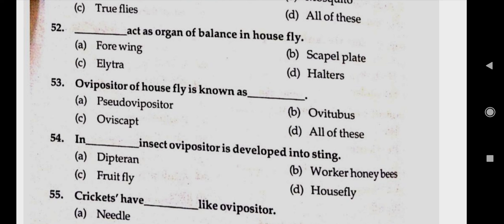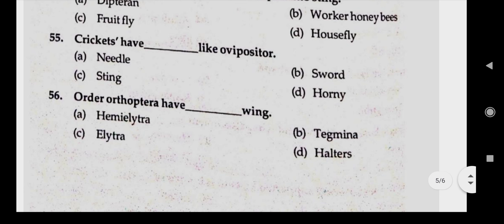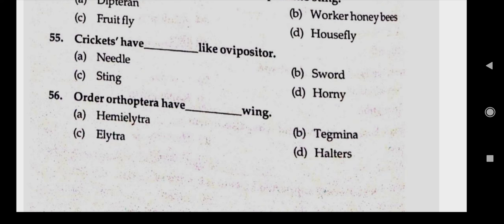Question number fifty-five: crickets have dash type of ovipositor. Answer A, needle-like. Question number fifty-six: order Orthoptera have dash type of wings. Answer B, tegmina.